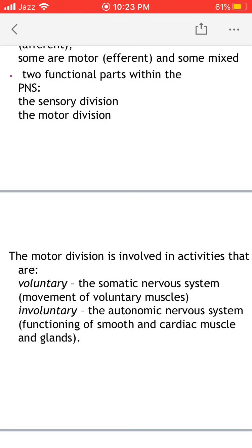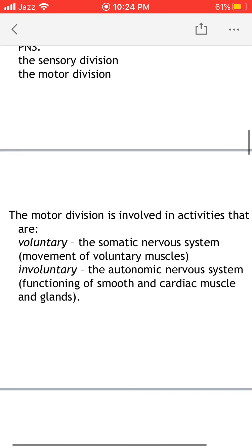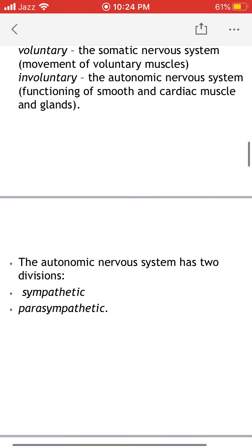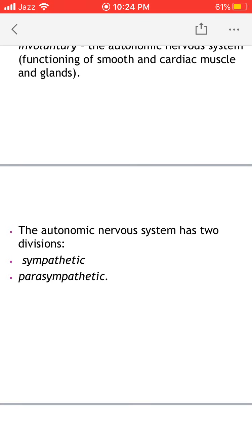The motor division is involved in activities that are either voluntary or involuntary. Voluntary activities are controlled by the somatic nervous system. Involuntary activities are controlled by the autonomic nervous system, which acts on smooth muscle, cardiac muscle, and glands, and has two divisions: sympathetic and parasympathetic.